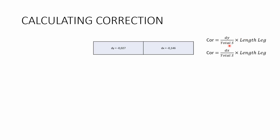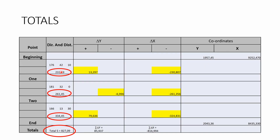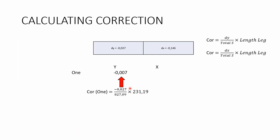We use two formulas to calculate corrections. The correction for Y equals (dy / total S) times the length of the leg. The correction for X uses the same formula but with dx instead of dy. The total S remains constant throughout all corrections. For example, to calculate the correction from beginning to point one, we substitute: negative 0.027 divided by total S, multiplied by the leg distance, giving the correction for that segment.